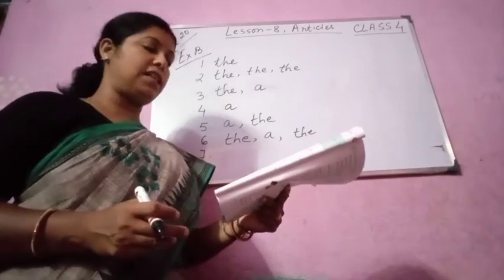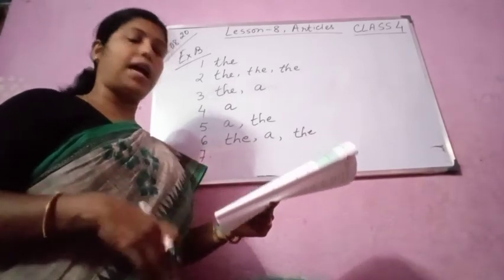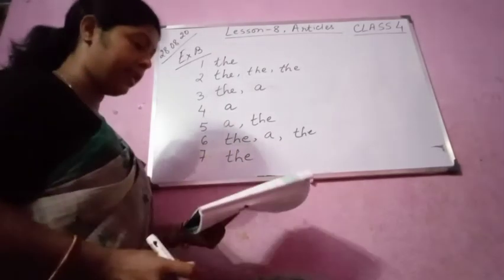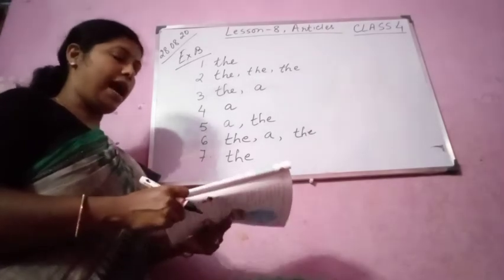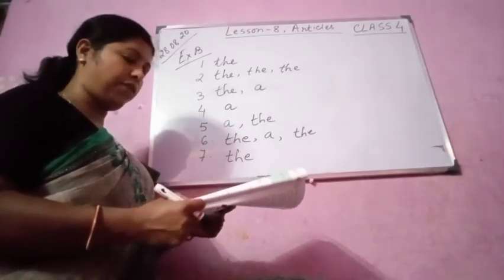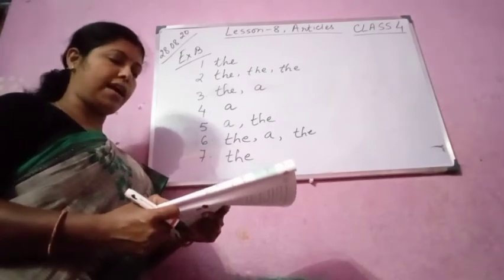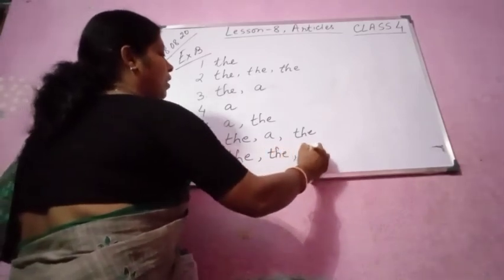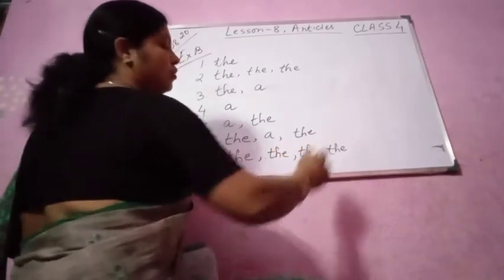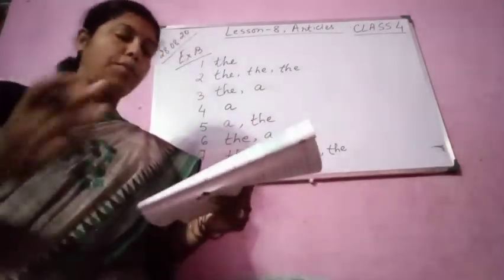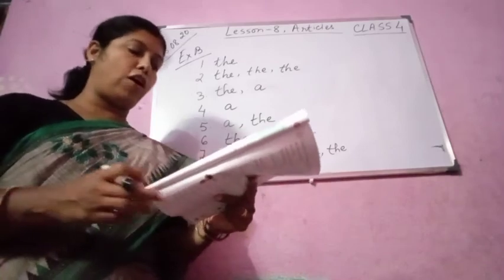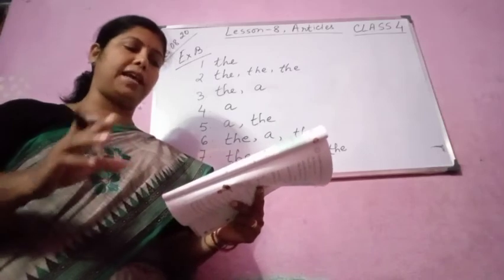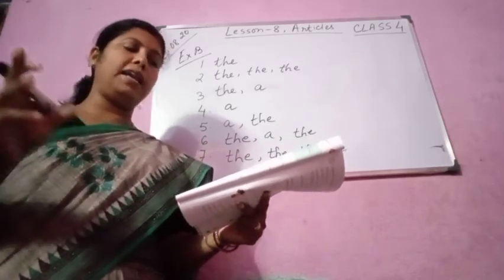In another bowl, beat the egg whites till they form stiff peaks. In another bowl, beat the egg whites. Egg whites are also there kept. So beat the egg whites till they form stiff peaks. Slowly add the shifted flour and the stiffly beaten eggs to the yolk, sugar and lemon rind mix. Now you see, everything is specific.